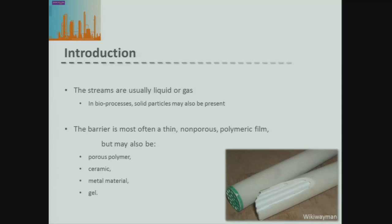We might have a ceramic material — here's an example of a ceramic membrane with tubes through which our feed passes, and the material that passes through the membrane passes through this ceramic material, as you can see in the cutaway where it's been broken to reveal the tubes. We can also have membranes made out of metals, which is a very non-porous structure. And we could also have what we call a gel membrane — almost a liquid membrane that we allow our materials to diffuse through.